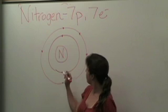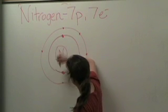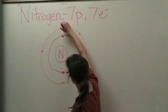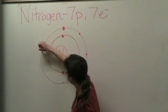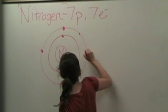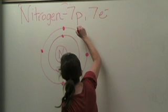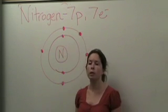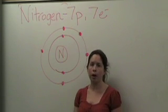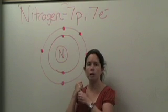So nitrogen has two electrons in the first shell and five electrons in the second shell. It doesn't have a full outer shell, and that's one of the reasons why nitrogen will undergo reactions. Atoms are most stable when they have a full outer shell.